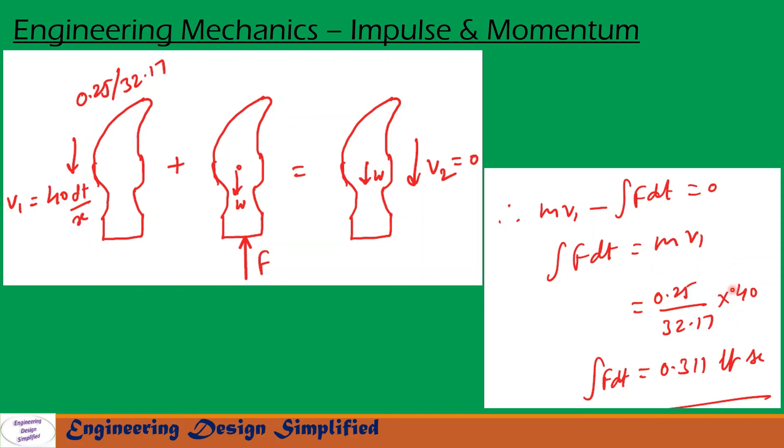Let us substitute the values: m is the weight divided by acceleration due to gravity in FPS system, that is 0.25 by 32.17, into v1 initial velocity 40 feet per second.